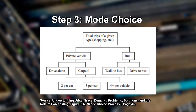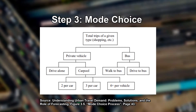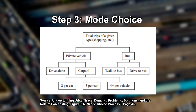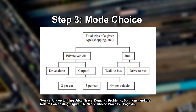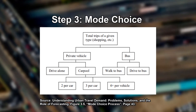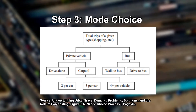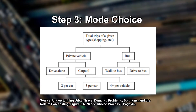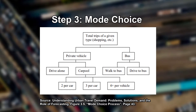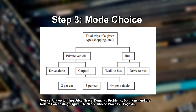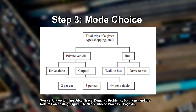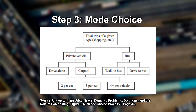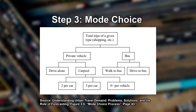The third step of the process is mode choice, which determines what type of transportation is used for a given trip. A utility function that accounts for the type of trip and the household taking it assigns a utility value to each type of transportation, such as private vehicles, carpooling, or public transportation. Whichever mode of transport has the highest utility is chosen.